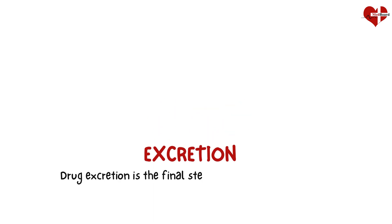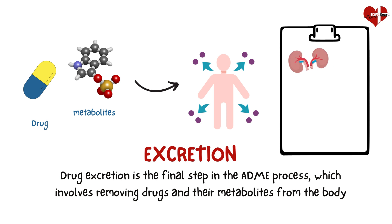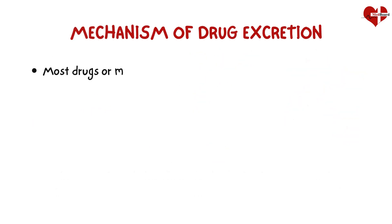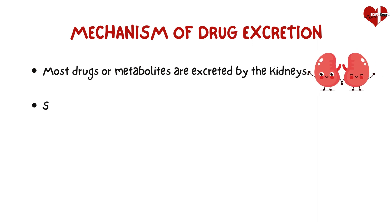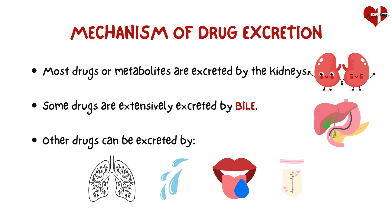Drug excretion is the final step in the ADME process, which involves removing drugs and their metabolites from the body. This process primarily occurs in the kidneys but can also involve other organs such as the liver, lungs, and intestinal tract. Most drugs or metabolites are excreted by the kidneys. Some drugs and their metabolites are extensively excreted in bile, while others can be excreted through the lungs, sweat, saliva, and breast milk.